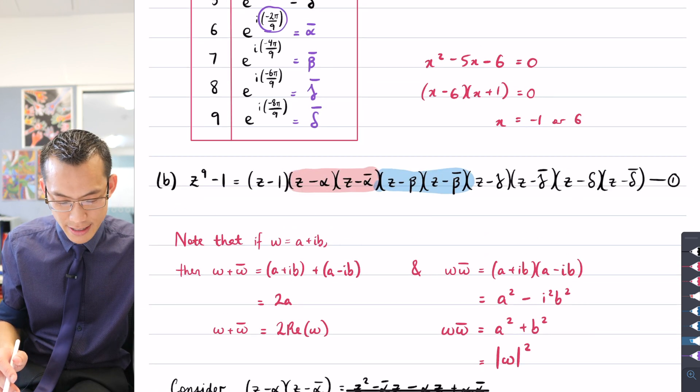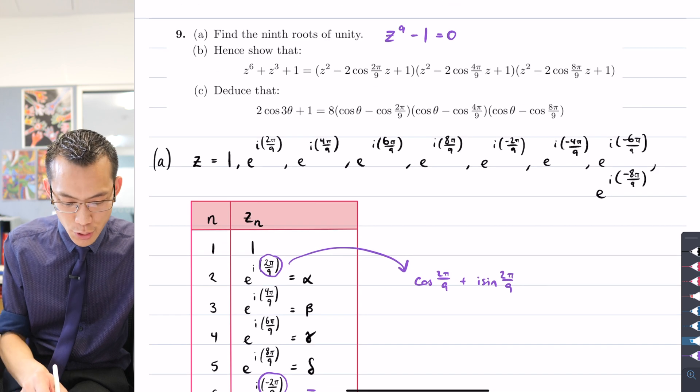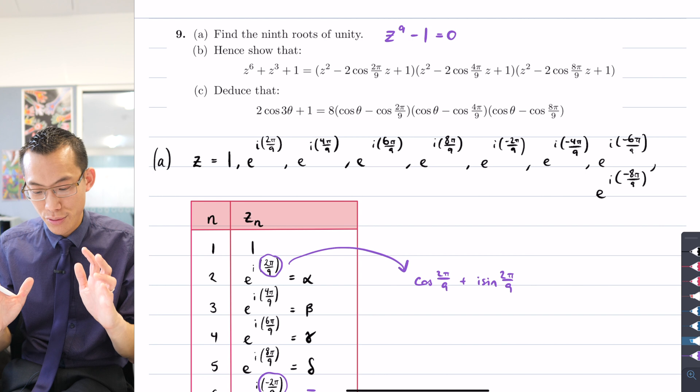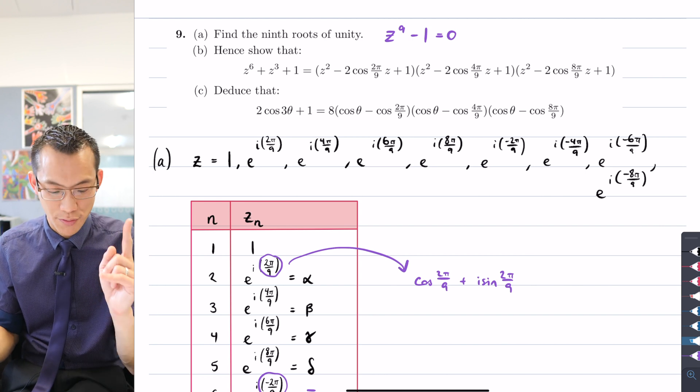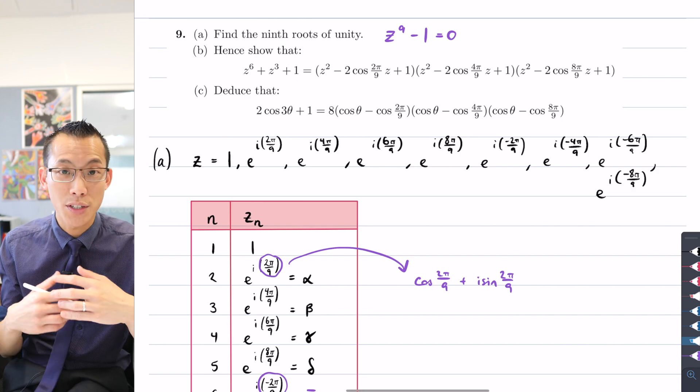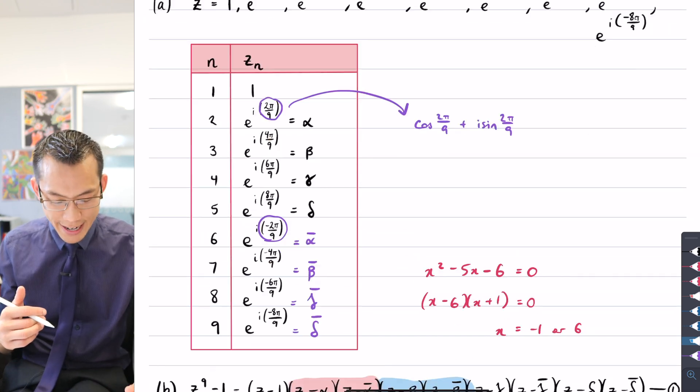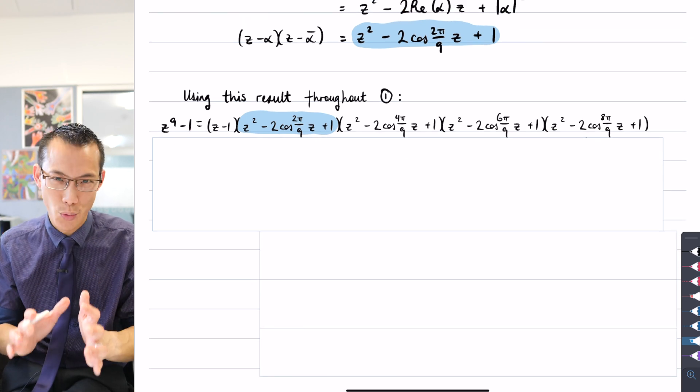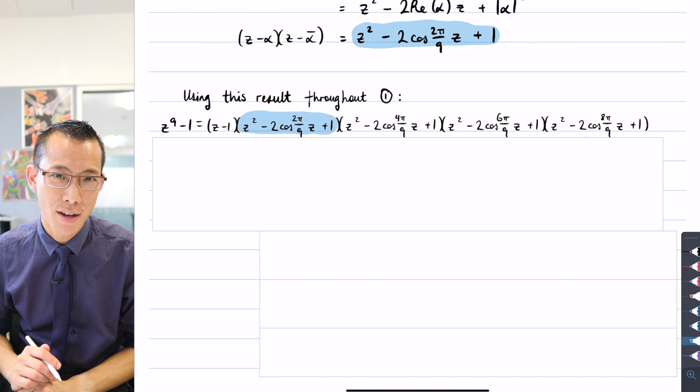For starters, if you look back at the result we're trying to prove, I've got 2π/9, I've got 4π/9, I've got 8π/9. There's no 6π/9 term, that's the first issue. And the second issue is on the left-hand side of what I'm trying to get to, there's a polynomial of degree 6, but I don't have a polynomial of degree 6, I have a polynomial of degree 9. So I still have some work to do before this result can be considered proven.